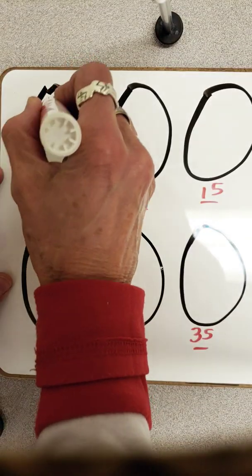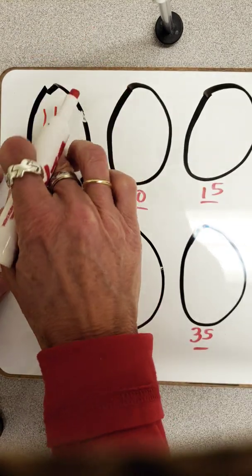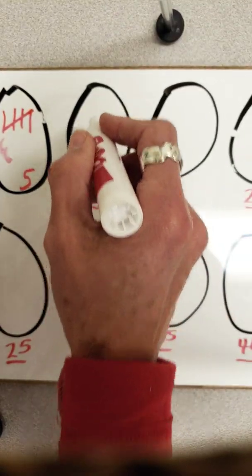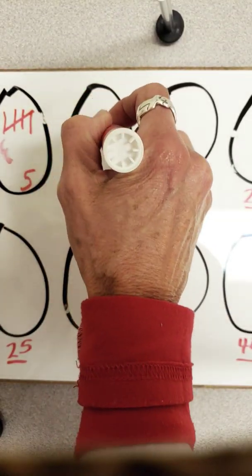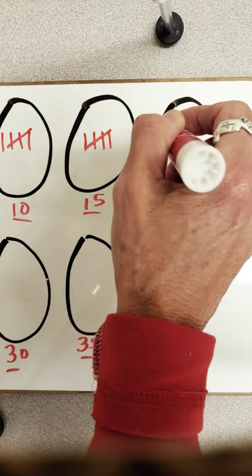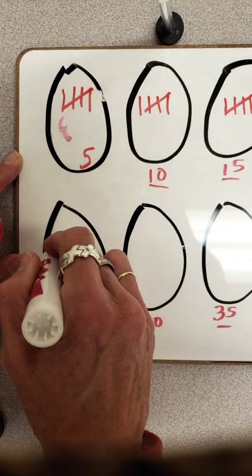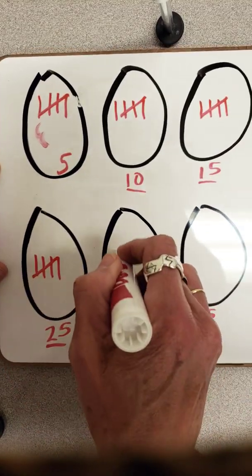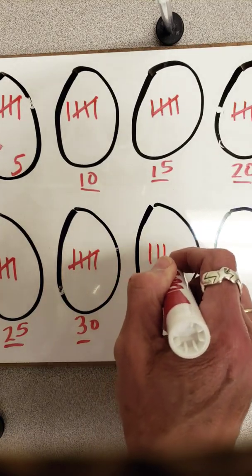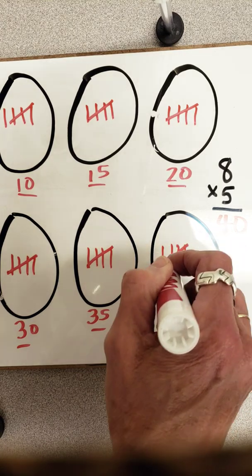So I could draw tally marks: 1, 2, 3, 4, 5 in this group. 1, 2, 3, 4, 5. 1, 2, 3, 4, 5. 1, 2, 3, 4, 5. 1, 2, 3, 4, 5. 1, 2, 3, 4, 5. 1, 2, 3, 4, 5. 1, 2, 3, 4, 5. Eight groups of five tally marks each.